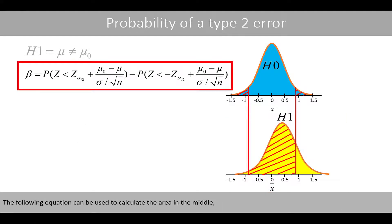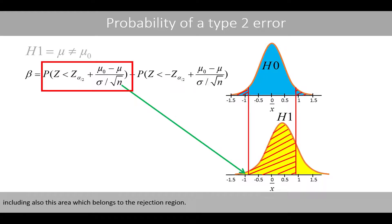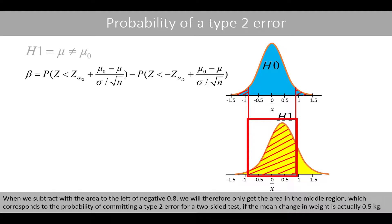The following equation can be used to calculate the area in the middle. This part of the equation calculates the area to the left of 0.8, including the area that belongs to the rejection region. This part of the equation only calculates the area to the left of negative 0.8. When you subtract the area to the left of negative 0.8, we get only the area in the middle region, which corresponds to the probability of committing a type 2 error for a two-sided test if the average weight change is actually 0.5 kilos.